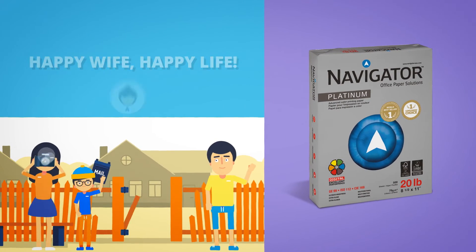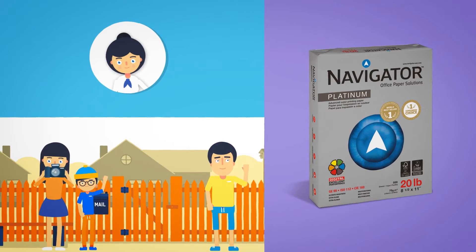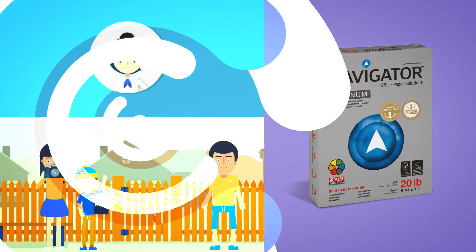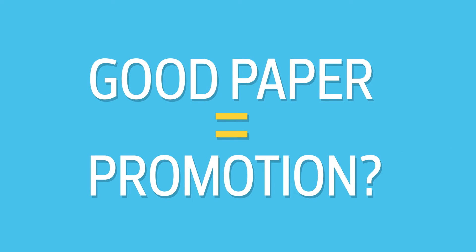Tom knew right then, Navigator Digital Platinum was the perfect choice for him. After his success at home, Tom starts thinking, Could paper help me to get that big promotion at work?